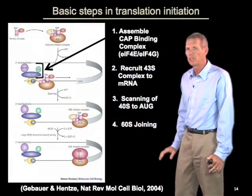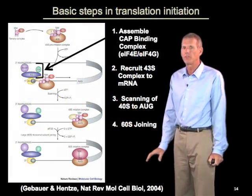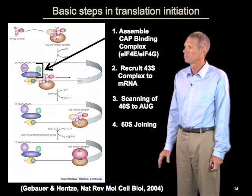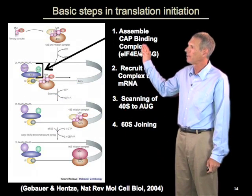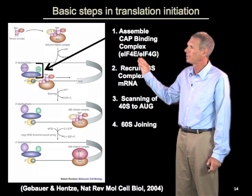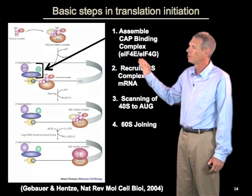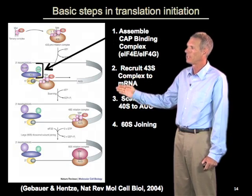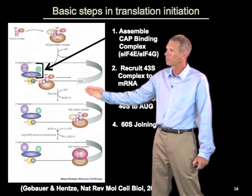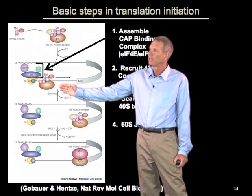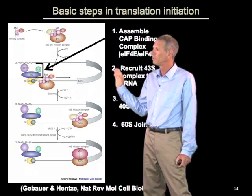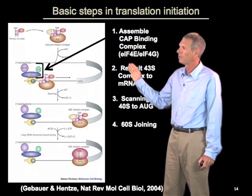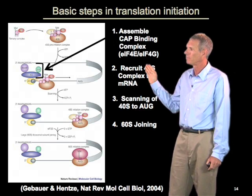In a eukaryotic cell, initiation is a multi-step process, which begins with assembling a CAP binding complex. Eukaryotic mRNAs have, on their 5' end, a specialized CAP structure, which then binds to these CAP binding proteins, EIF4E and EIF4G.